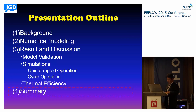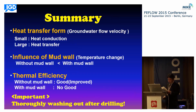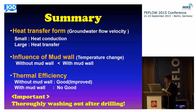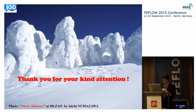I would like to move on to the final part of my presentation: the summary. Here I have summarized the key points. First, when the groundwater flow velocity is small, thermal energy movement is dominated by heat conduction. Second, if the mud wall remains, it brings thermal influence and becomes a thermal resistance. When a vertical borehole is built, it is recommended to thoroughly wash out any mud on the borehole wall in order to make the ground heat extraction system as efficient as possible. Thank you very much.